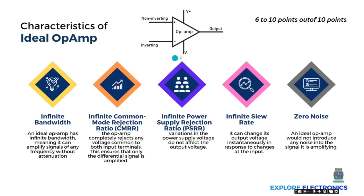Infinite power supply rejection ratio (PSRR) means that variations in the power supply voltages V+ and V− will have no effect on the output voltage. We need to give a standard dual voltage power supply to the op-amp. Even if we give plus 5/minus 5, plus 7/minus 7, or plus 12/minus 12, and those power supply voltages vary, there will be no change in the output.